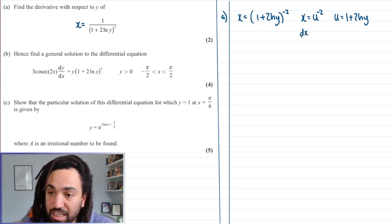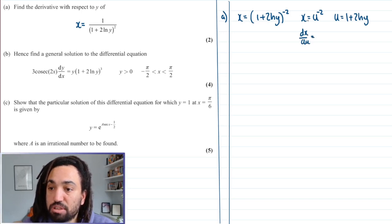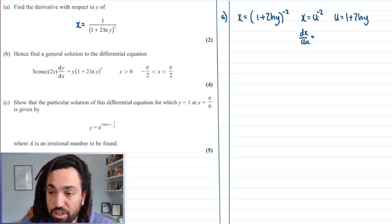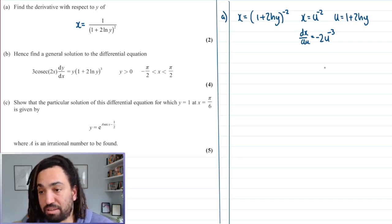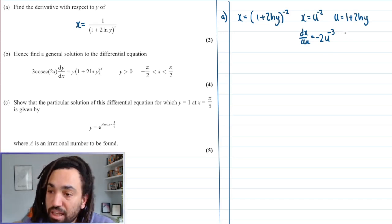Now I'm going to use the chain rule. So I'm going to say X is equal to U to the minus 2, where U is equal to the bracket, which is 1 plus 2 ln Y. This is classic chain rule. You're going to want to do dx by du, so differentiating this with respect to U. This is going to give us minus 2U to the minus 3.